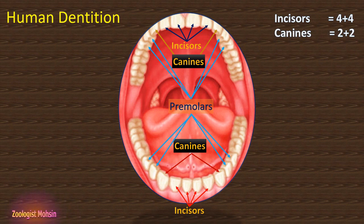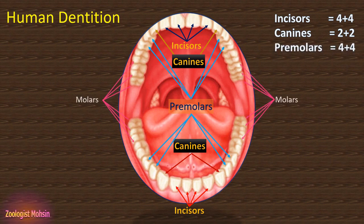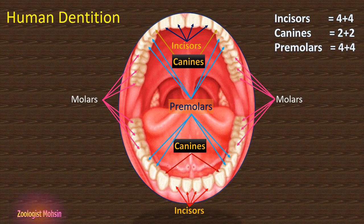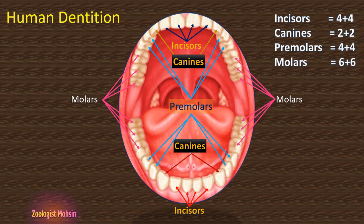Next, behind the canines, are premolars — 4 premolars, 2 on each side per jaw, making 8 premolars total in human dentition. Next are molars: 3 on each quadrant, giving a total of 12 molar teeth in the human mouth. So the total number of permanent teeth is 32: incisors 8, canines 4, premolars 8, and molars 12.